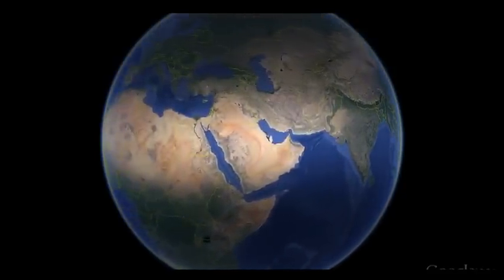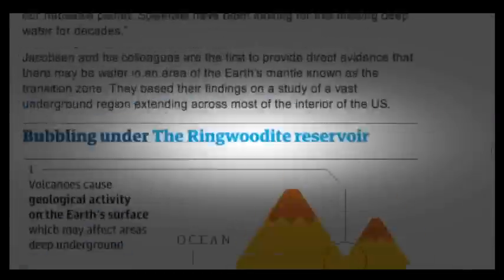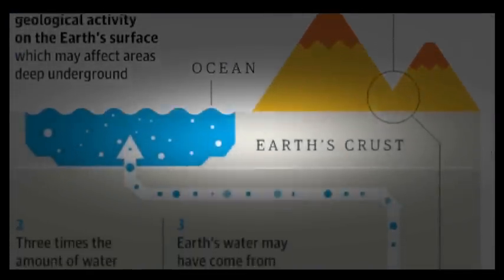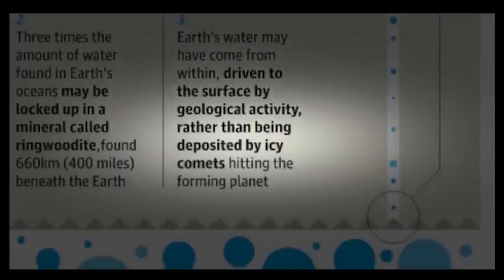Scientists believe they've found evidence of a potential ocean beneath our home planet's crust. The study from researchers at Northwestern University and the University of New Mexico have concluded the body of water rests about 400 miles underneath Earth's crust and is so large it can fill all our oceans three times over.